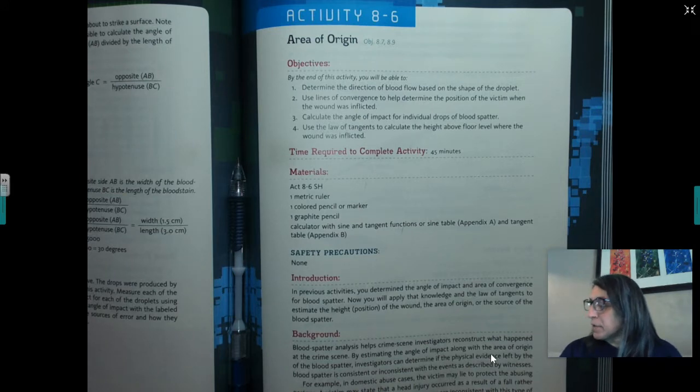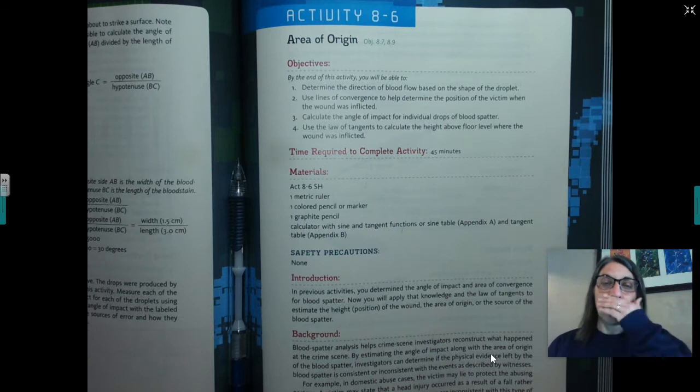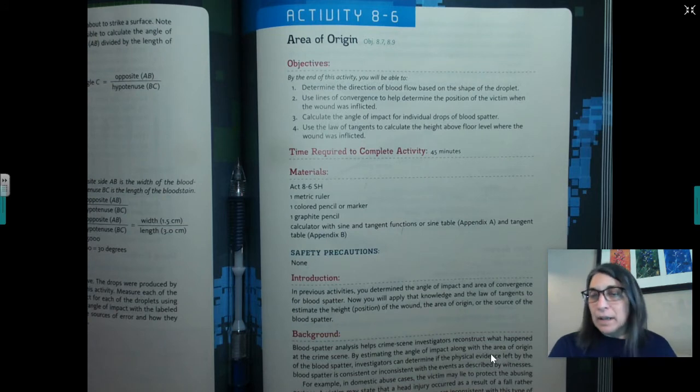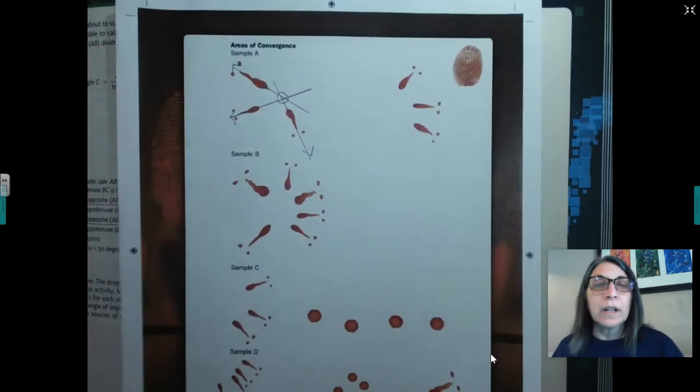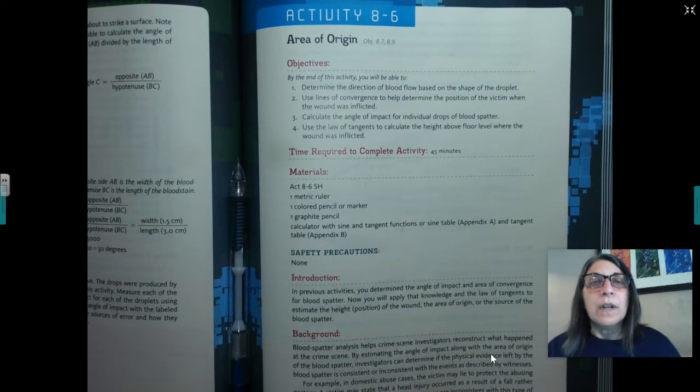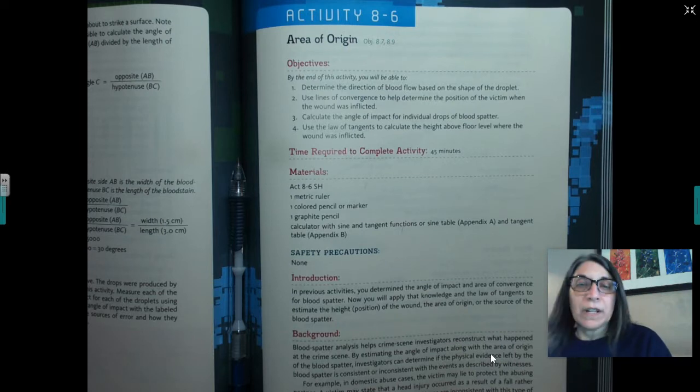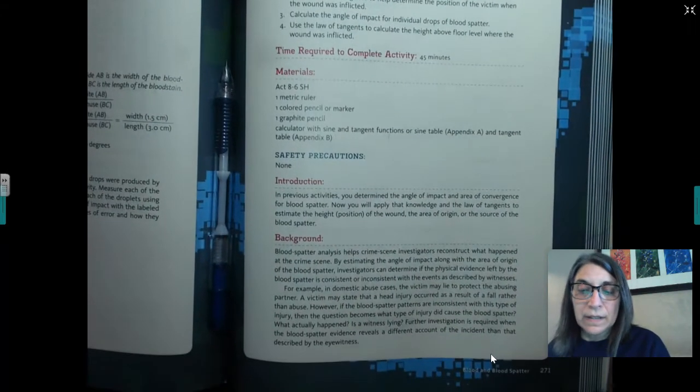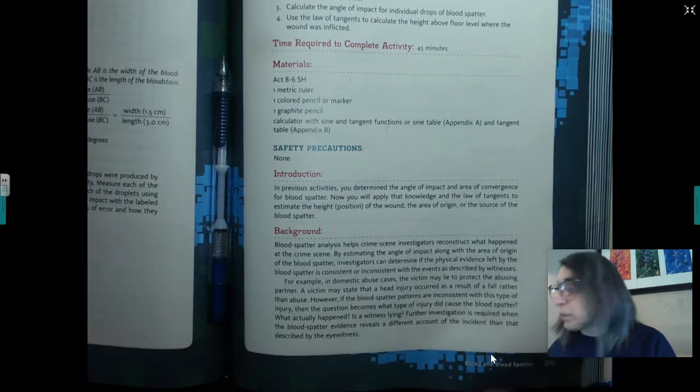But anyway, so you should have your book, Activity 6. We're actually gonna move, we've practiced the area of convergence. Hopefully you guys practiced it a little bit. Maybe you didn't, it's totally up to you, but you've got to be able to do it to do this activity. So hopefully you did a little bit of practice and figured out some of these from the previous video. So now we want to go into area of origin.